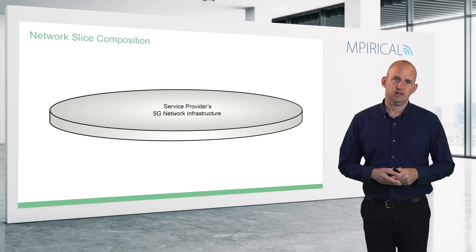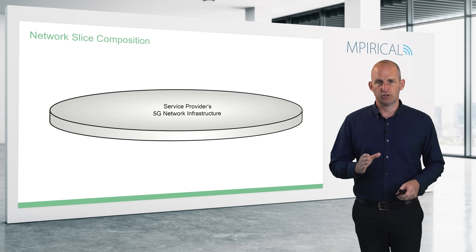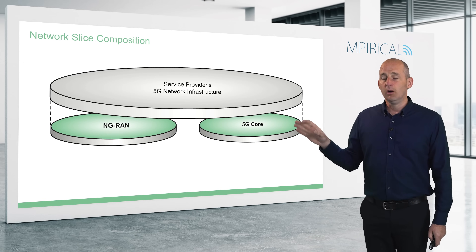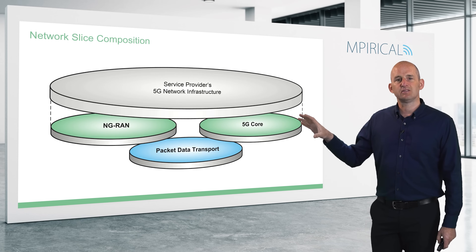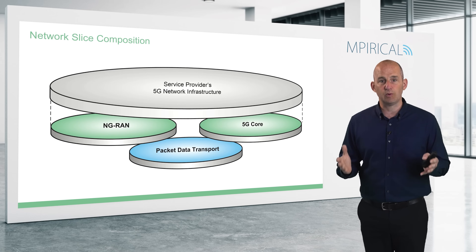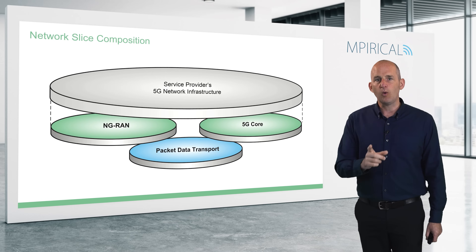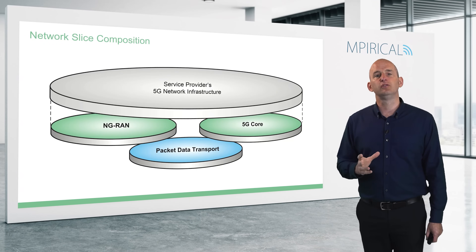The service provider's 5G network infrastructure is fundamentally made up of three main domains: the Next Generation Radio Access Network, the 5G Core, and the underlying packet data transport infrastructure. These three domains are what need to be in place to support a network slice. To create this logical end-to-end instance of a 5G network, the network has to be configured on the RAN, the core, and the transport network. Note that we don't necessarily need to use a 5G Next Generation RAN — we can use a non-3GPP access network like Wi-Fi, or even wireline access — they all fall under the remit of network slicing.